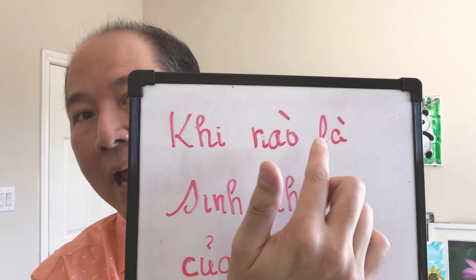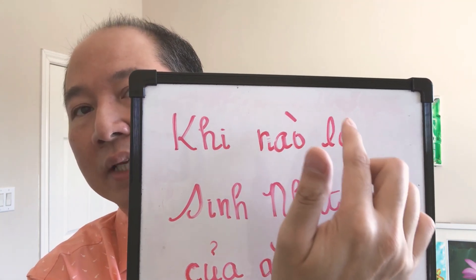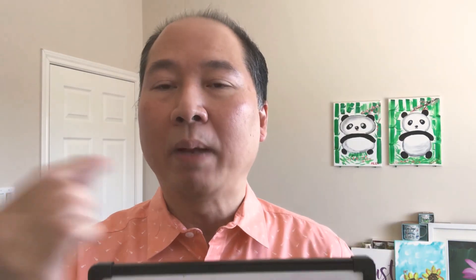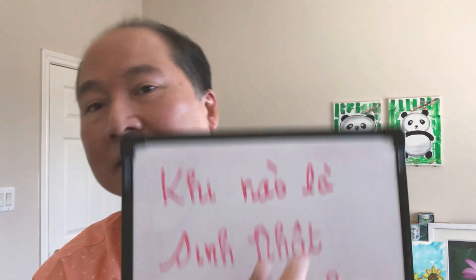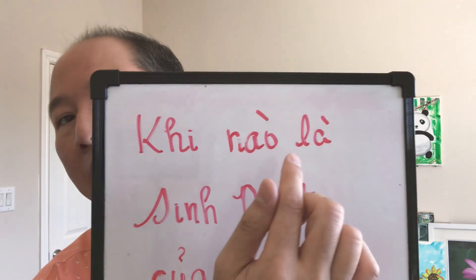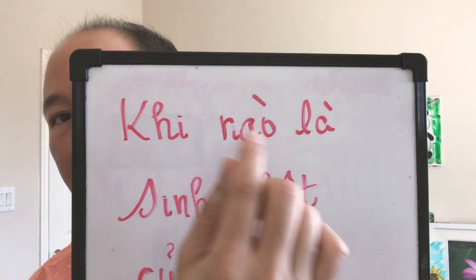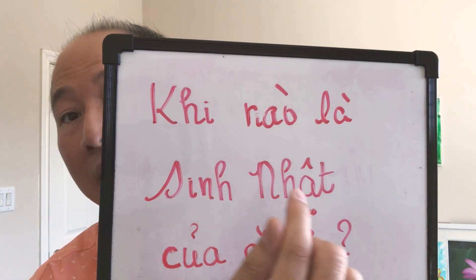Khi nào là. You notice that there's a similar accent over the letter A. When that little accent exists over a word, it brings the tone down a little bit. Again, if I erase that, I would say khi nào la — la means 'to yell,' which is a different word. So it is pronounced khi nào là sinh nhật. Sinh nhật is birthday in Vietnamese.